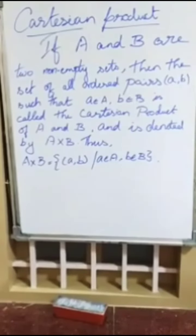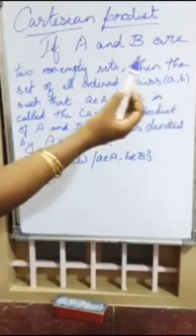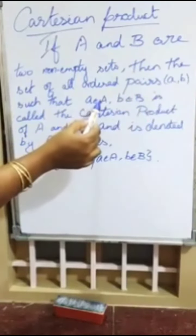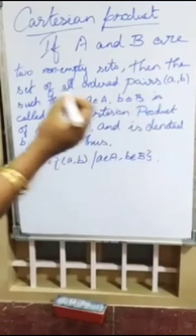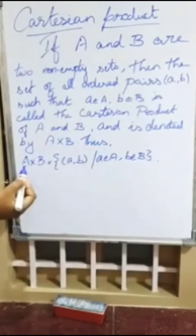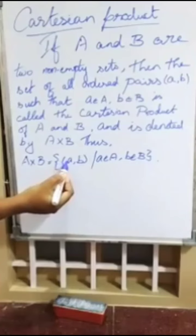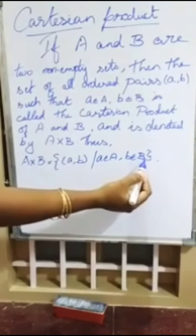If capital A and capital B are two non-empty sets, then the set of all ordered pairs (a, b) such that a belongs to capital A and b belongs to capital B is called the Cartesian product of capital A and capital B, and is denoted by A cross B. Thus, capital A cross B equals the set of ordered pairs (a, b) such that a belongs to capital A and b belongs to capital B.